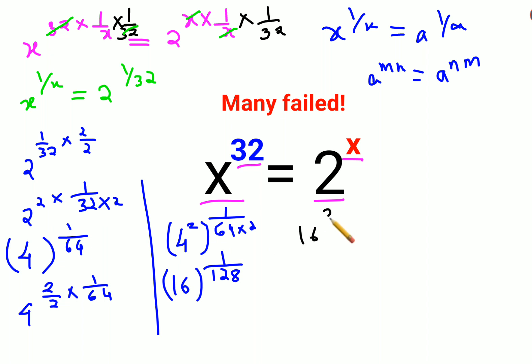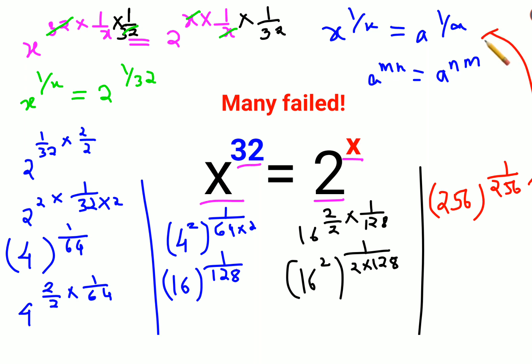After this we'll again try to do the same exercise. This becomes 16 raised to 2 upon 2, everything multiplied by 1 upon 128. So now this becomes 16 square raised to 1 upon 128. This then eventually comes out to be 16 square is 256, everything raised to 1 upon 256. This is basically my entire target, and this was equal to x raised to 1 upon x, so from here I can say therefore the value of x is 256.